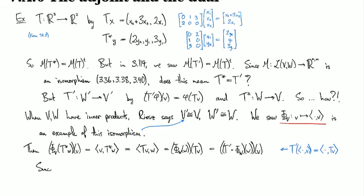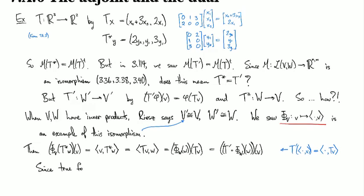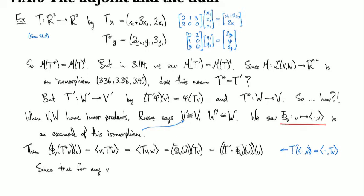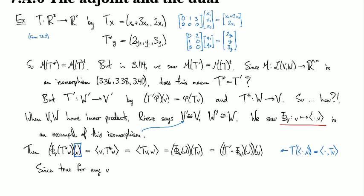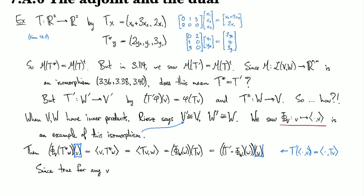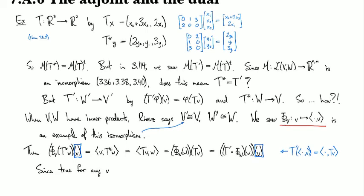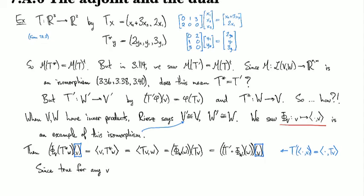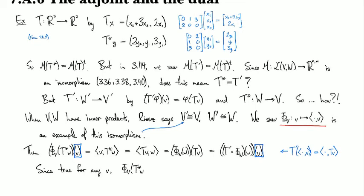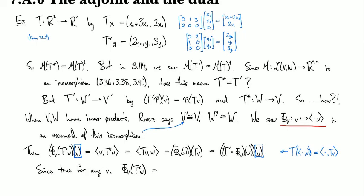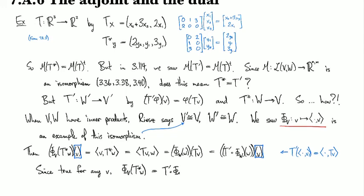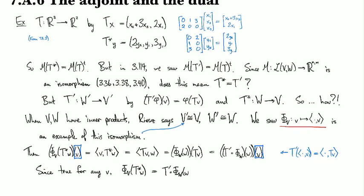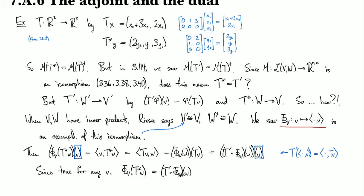So from this hairy last derivation here, since this is true for any v, and that's why I went as far as I did because we started with a thing that gets fed a v and I wanted to end with it looking like a thing that gets fed a v. Now, because this calculation is true for all v's, that means in the next line we can strip that part away and get phi v of t star w is equal to t prime of phi of w applied to w.